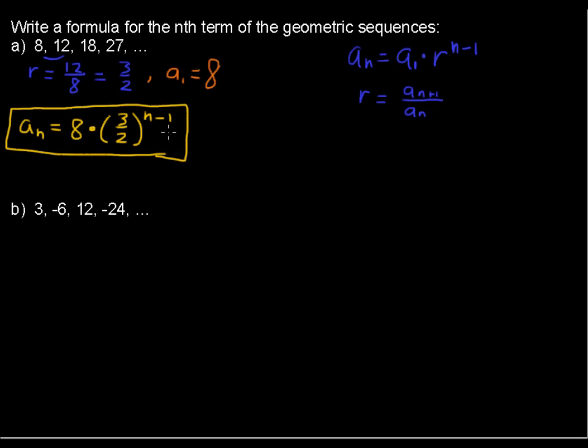Now the reason we're doing this n minus 1, it has nothing to do with it being a fraction or anything. It's always going to be of this form. The reason is because if we were to put in n equals 1, then we want to get that first term.